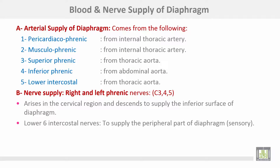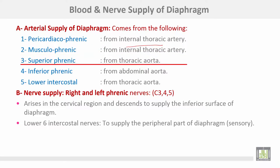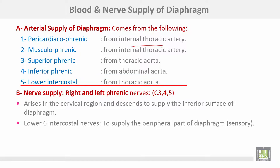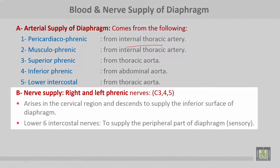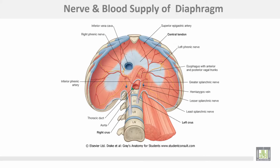The blood and nerve supply of the diaphragm: arterial supply comes from the pericardiacophrenic artery (from the internal thoracic artery), the musculophrenic artery (also from the internal thoracic), the superior phrenic artery (from the thoracic aorta), the inferior phrenic artery (from the abdominal aorta), and the lower intercostal arteries. Nerve supply: the right and left phrenic nerves, arising from the 3rd, 4th, and 5th cervical nerves, descend to supply the inferior surface of the diaphragm, with the lower six intercostal nerves supplying the peripheral part.